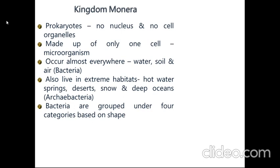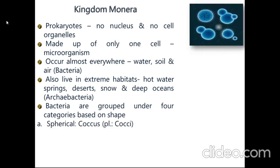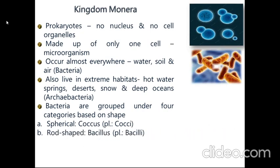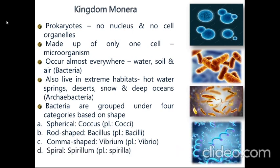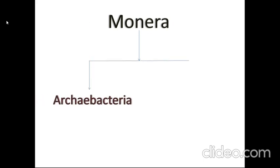Bacteria are grouped into four categories based on their shape: spherical coccus (plural cocci), rod-shaped bacillus (plural bacilli), comma-shaped vibrium (plural vibrio), and spiral spirillum (plural spirilla). The kingdom Monera is sub-categorized into two different types: archaebacteria and eubacteria.